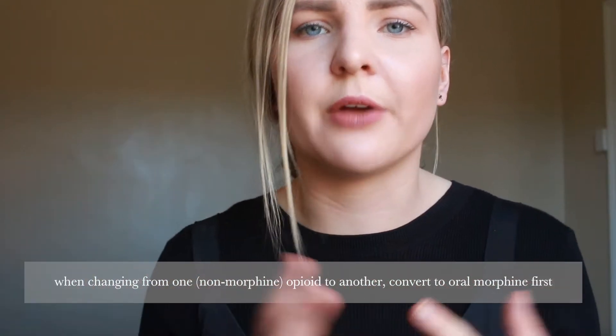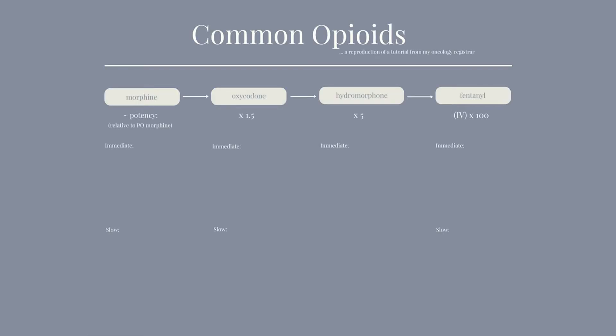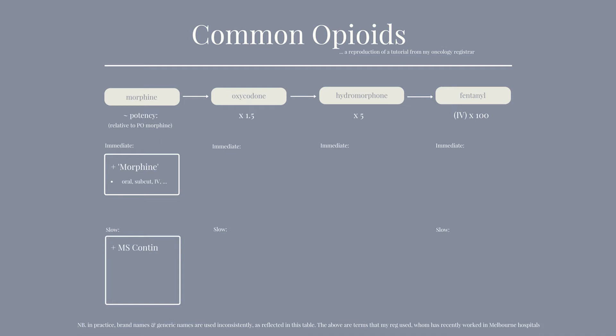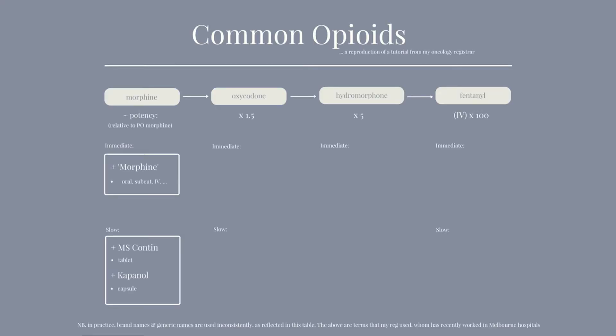For morphine, the immediate acting form can come in lots of different forms: oral syrups, IV, IM, subcut, and so on. The slow acting forms include MS Contin and Kapanol. MS Contin comes in tablet form; Kapanol comes in a capsule form, which means you can break it open if you're having difficulty swallowing. The 'cont' in MS Contin means continuous release - that's a handy way to remember what's what.